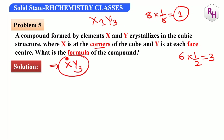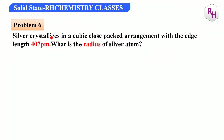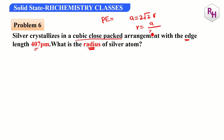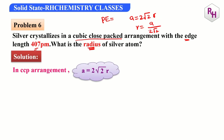Next: for compound XY3, X = 8 × (1/8) = 1 and Y = 6 × (1/2) = 3, hence the formula is XY3. For silver crystallizing in cubic close packing (CCP), the radius formula from packing efficiency derivation is r = a/(2√2).